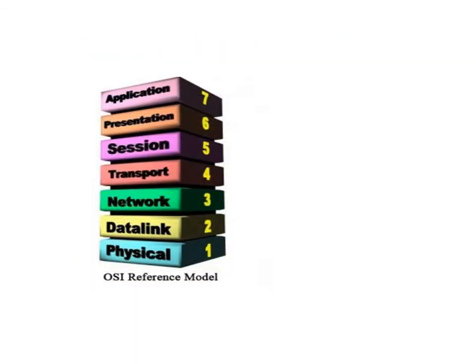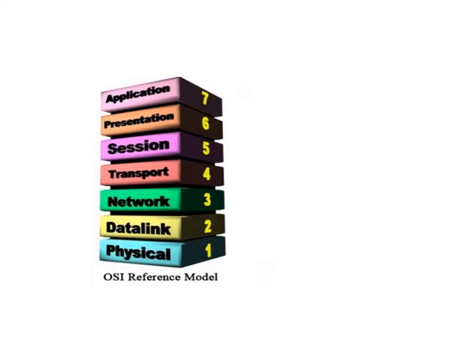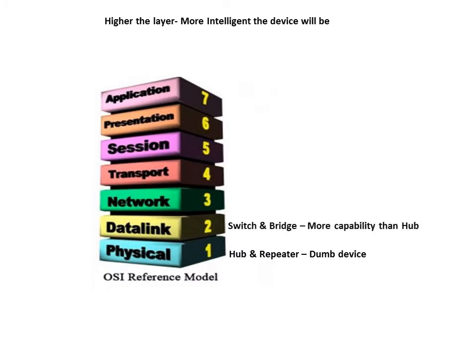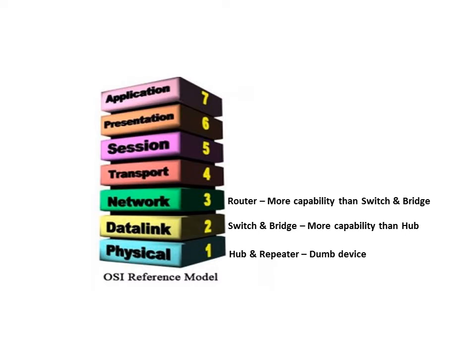The easiest way to understand these components is to know at which OSI layer they operate. Higher the layer, more intelligent the device will be. Hub and repeater operate at layer 1 and have very limited functionalities. Switch and bridge operate at the data link layer and have more capability than hub. Router operates at network layer 3 and has more capability compared to switch and bridge.